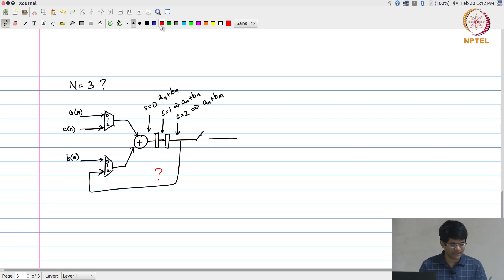So, in other words what ended up happening over here was I needed to add one extra register out here. In other words if n is equal to 3, 2 registers are needed to make sure that the functionality comes out correctly.